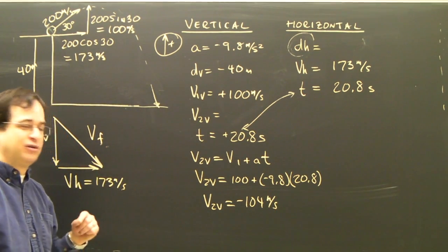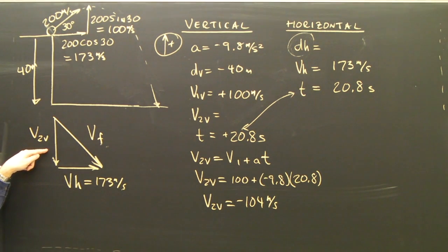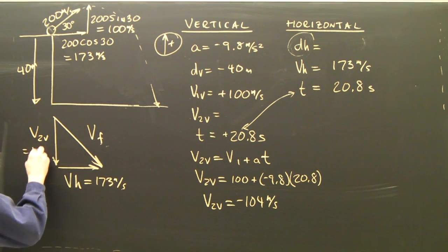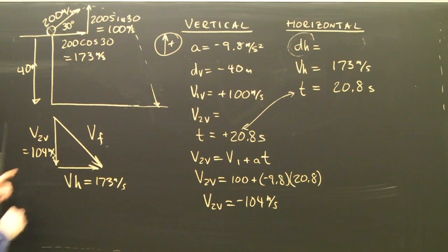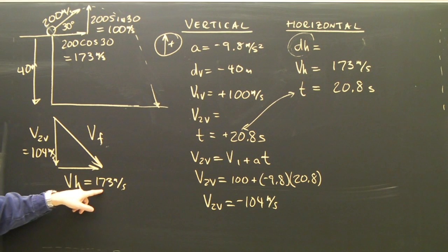It's negative 104 meters per second, because when it hits the ground, the vertical component is down. So I'm going to bring that over here. It's drawn down, so I'm just going to put the 104 meters per second here. My horizontal is 173 meters per second.